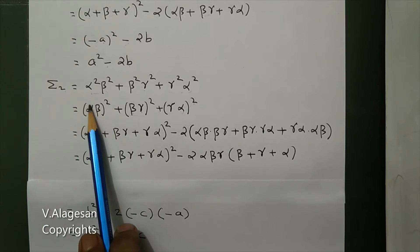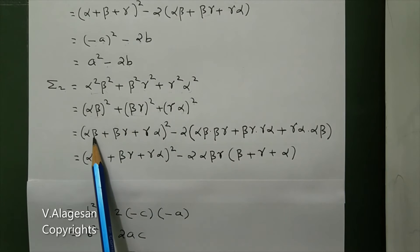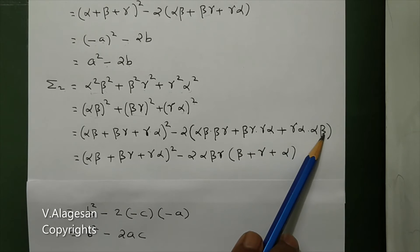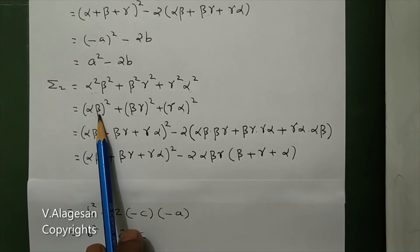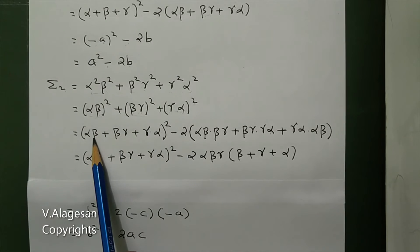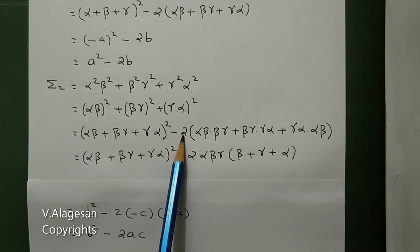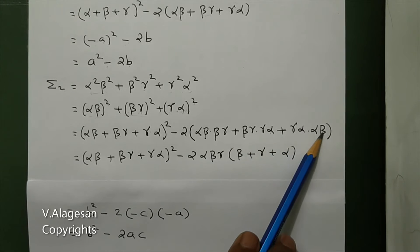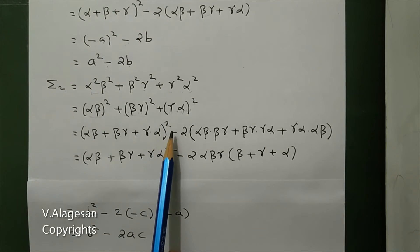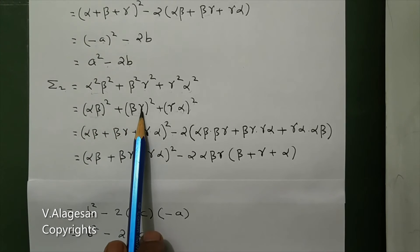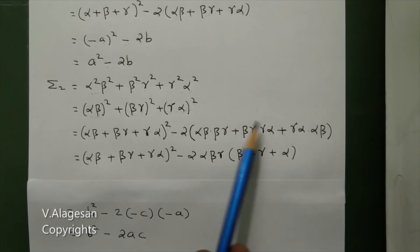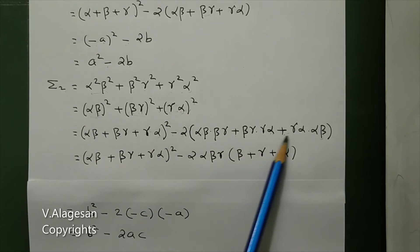The identity is: a² + b² + c² = (a+b+c)² - 2(ab+bc+ca). Applying this with a = alpha·beta, b = beta·gamma, c = gamma·alpha, we get (alpha·beta + beta·gamma + gamma·alpha)² - 2·[alpha·beta·beta·gamma + beta·gamma·gamma·alpha + gamma·alpha·alpha·beta].